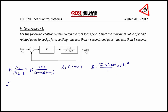Sigma_d is equal to the sum of the poles minus the sum of the zeros. So that's (-1 - j) + (-1 + j) - (-1) over 1, giving sigma_d equal to negative 1.